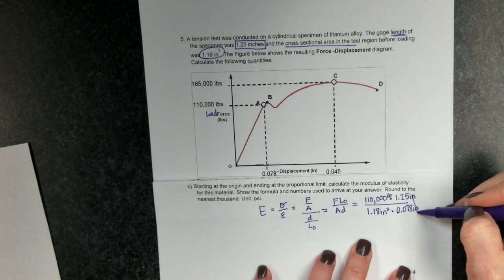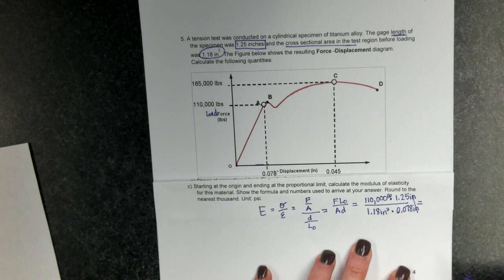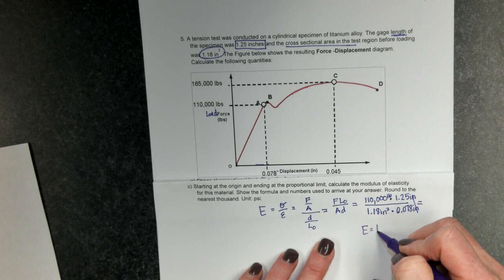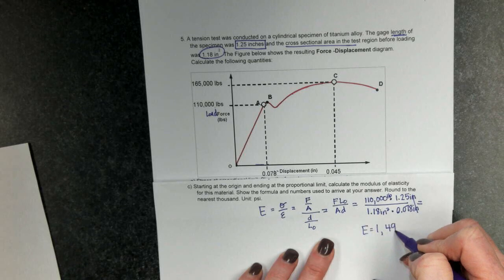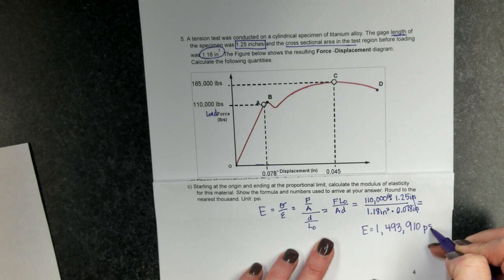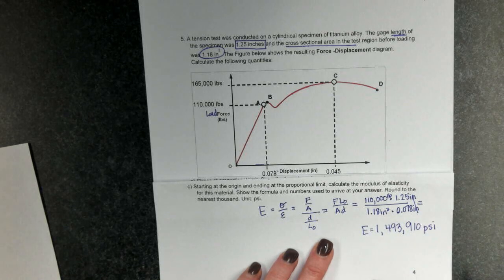These inches reduce out, and when I do the math, my answer is 1 million, my modulus of elasticity would be 1,493,910 psi, pounds per square inch.